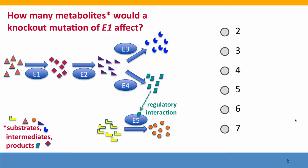So here's a problem to help you think about this. I've drawn a very simple biochemical pathway with five enzymes labeled 1, 2, 3, 4, 5, and I've shown the substrates, intermediates, and products for these enzymes as little shapes. What I want you to think about is: if there was a mutation that affected enzyme 1 — so the gene encoding enzyme 1 has a mutation that causes enzyme 1 to not function — how many of the metabolites in this picture are going to be affected?